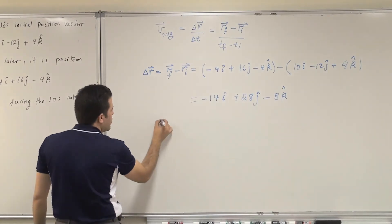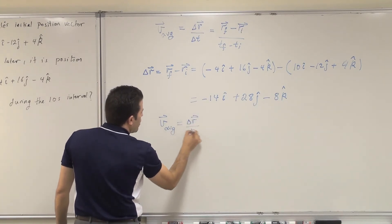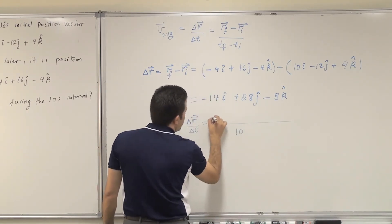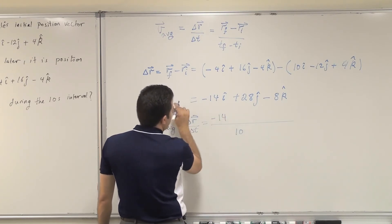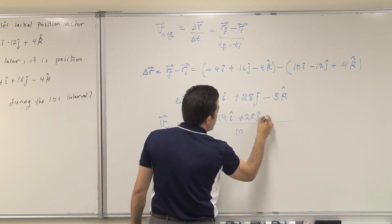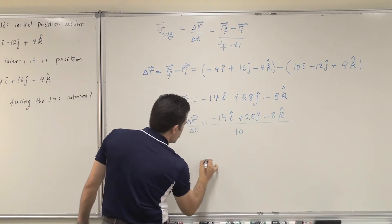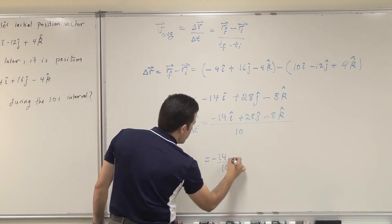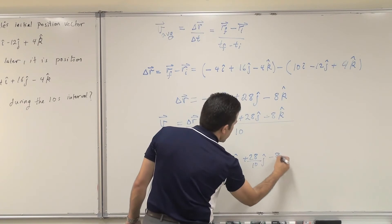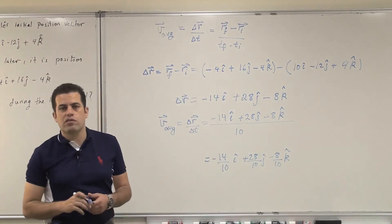Now I can substitute in the v-average equation. V-average, or average velocity, equals delta r over delta t. I know that my delta t is 10 — that's 10 minus 0. Delta r is minus 14i-hat plus 28j-hat minus 8k-hat, which means I divide each component by 10: minus 14/10 i-hat plus 28/10 j-hat minus 8/10 k-hat. And this concludes the answer. Thank you.